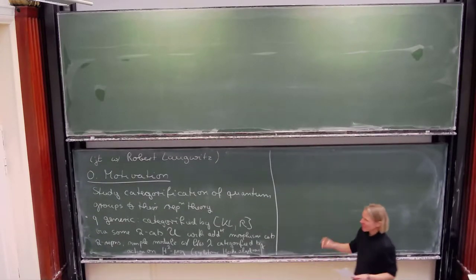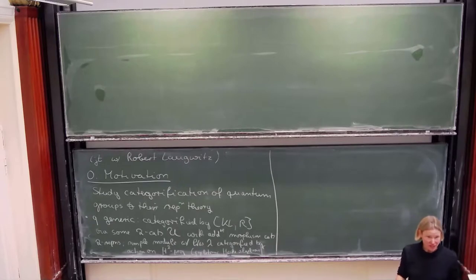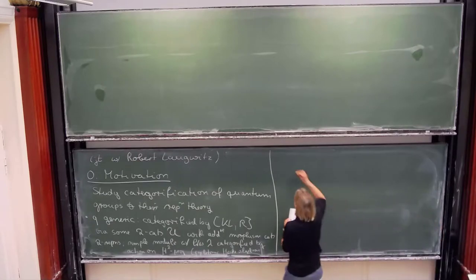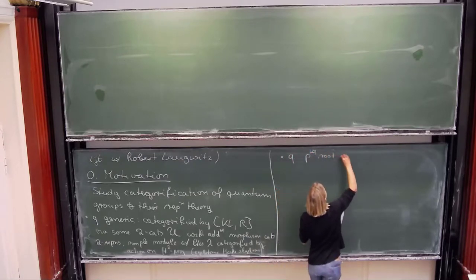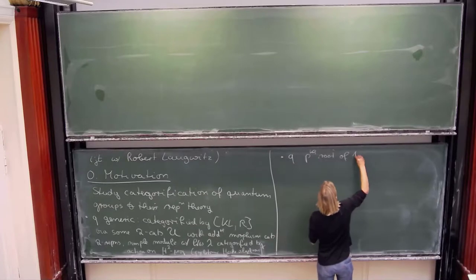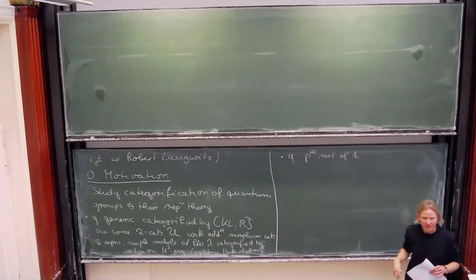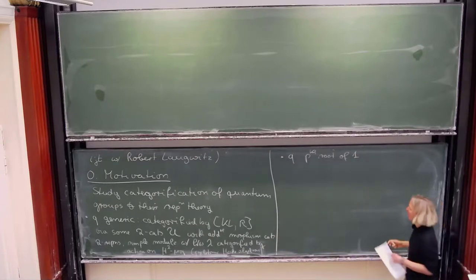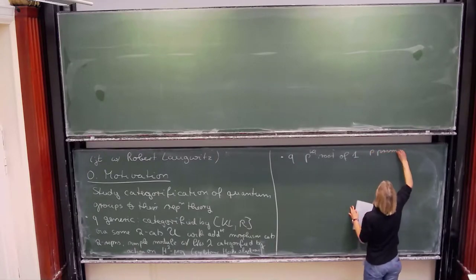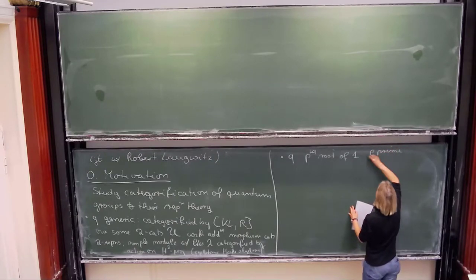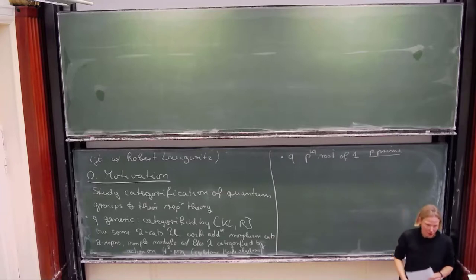This is the generic situation, but people are also very interested in quantum groups at roots of unity. What if Q is a p-th root of unity? By that I mean a primitive p-th root of unity where p is prime. People can only do this so far for p prime.